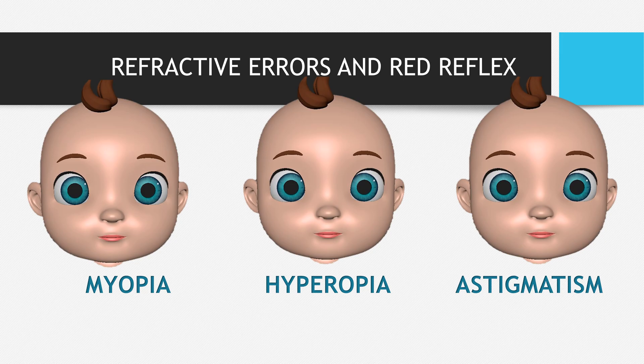Other reflexes such as in myopia and hypermetropia also give information about the underlying refractive error. It doesn't give quantification, but it gives a clue about what refractive error the child has. In myopia, if you see an inferior crescent, the child is likely myopic. If you see a superior crescent, the child is most likely hyperopic. In astigmatism, you see a bright streak of light, indicating the child has astigmatism in that eye.